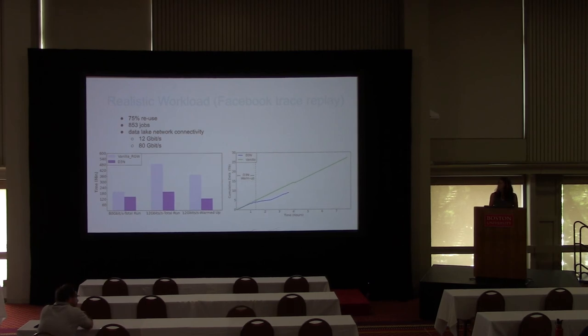This is one of the cool experiments we have. This is actually running in our production in our real environment. We played the Facebook trace which has 75% reuse, around 850 jobs. We are comparing the D3N implementation with original vanilla RADOS gateway which has no caching. We are running it under two network scenarios. In one, we have high connectivity between our cache service to the backend, which is around 40 gigabits per second. We have two racks here, so the aggregated bandwidth was 80 gigabits. The other scenario, which has 12 gigabits, is more realistic. For both experiments, we showed that D3N improved the performance a lot. On the left graph, you see the traffic going to the backend. We decrease the total amount of network going to the backend.